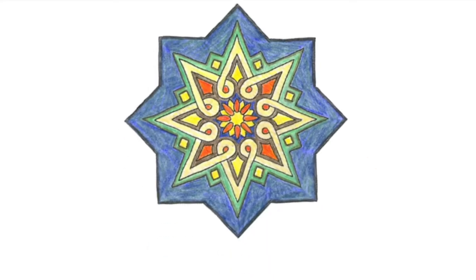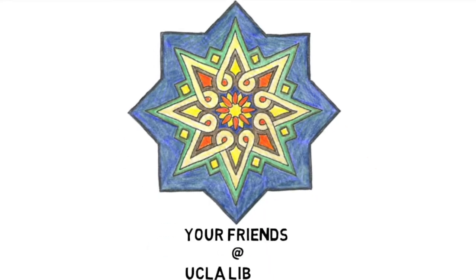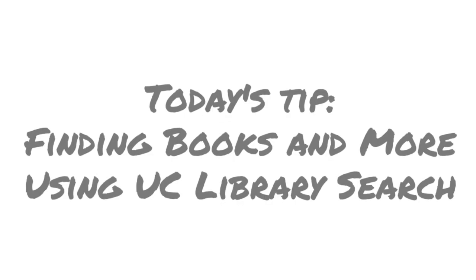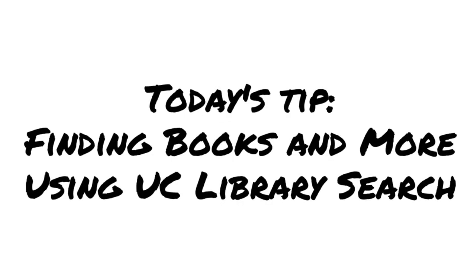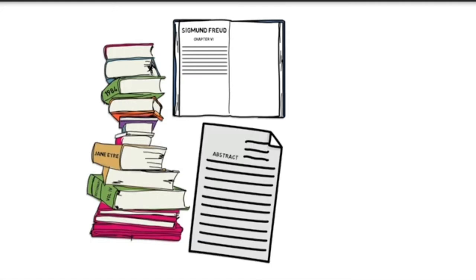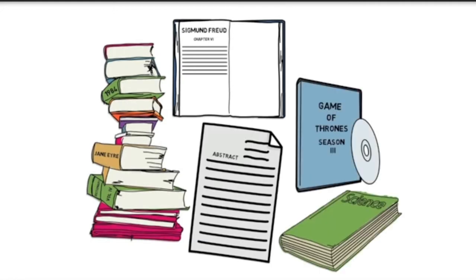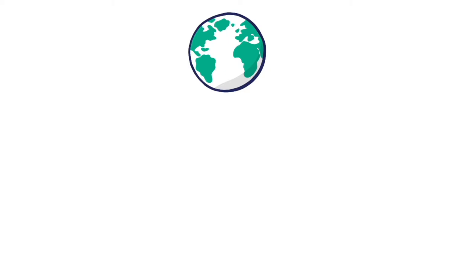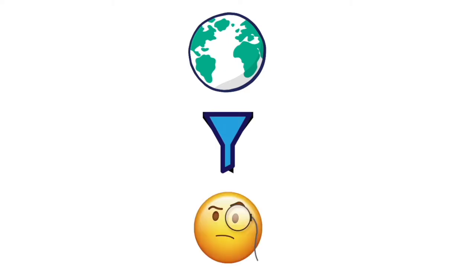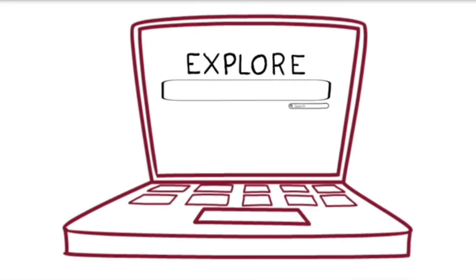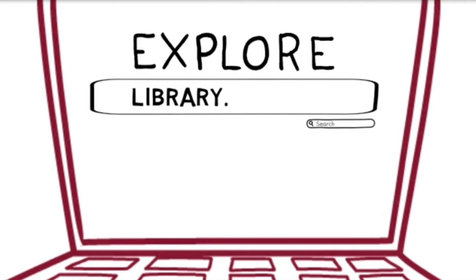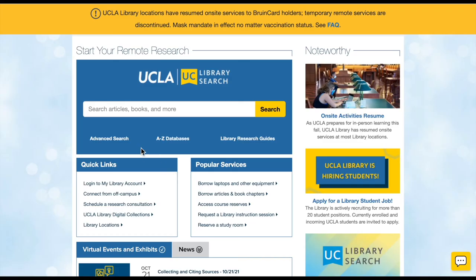Hey there Bruins! Here's a quick tip from your friends at the UCLA Library. Today's topic: finding books and more using UC Library Search. In this tutorial, you will learn how to use UC Library Search to find resources, filter your search results, and identify key information available in a catalog record. Visit library.ucla.edu and let's check out UC Library Search.